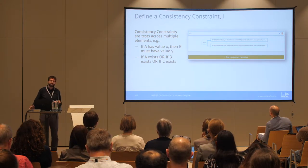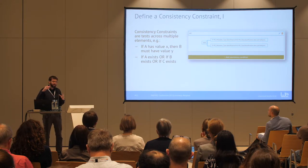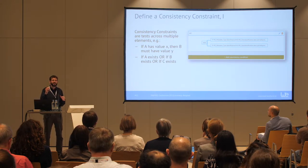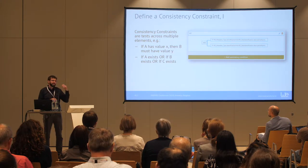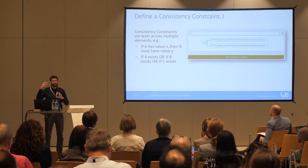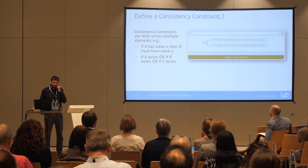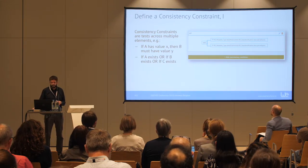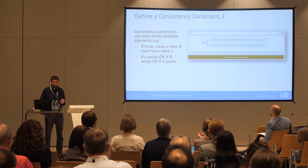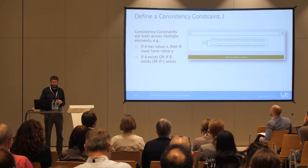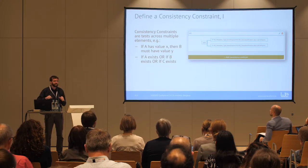It's also possible to look at the whole document and define rules for consistency purposes. For example, if it's a single dataset, we expect certain other values to be set from a scope code. Doing that is possible using consistency constraints — for example: if A exists, or if B exists, or if C exists, then it's valid. So we expect one of the three elements, or we can have conditions like: when there is a value defined, I need to have this other value present.